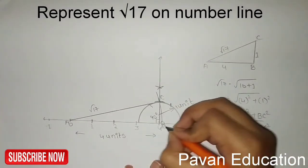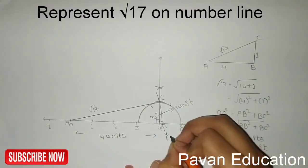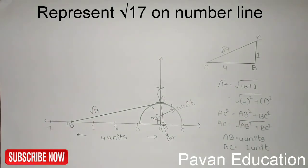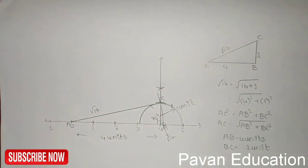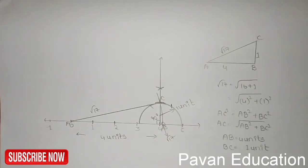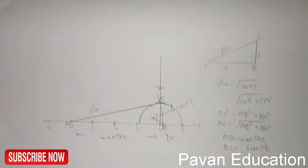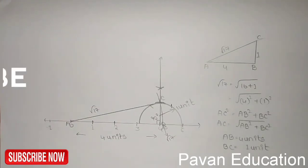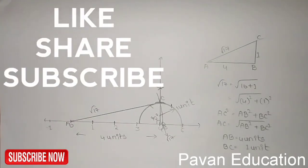So we have successfully represented root 17 on the number line. In this video I hope you all learned how to represent root 17 on the number line. Thank you for watching — like, share, and don't forget to subscribe to Pawan Education.